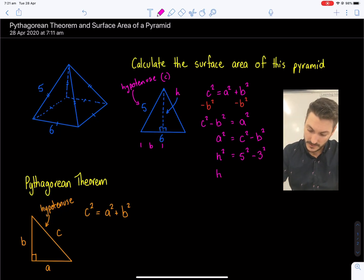And so therefore, H squared is going to be equal to five squared, take away three squared. Now five squared is 25. Three squared is nine. 25, take away nine is 16. So H squared is equal to 16. And if we just want H, not H squared, we need to take the square root of both sides. And therefore, H is equal to four, or the square root of 16, which is four.